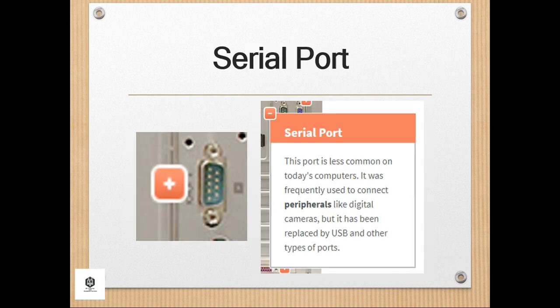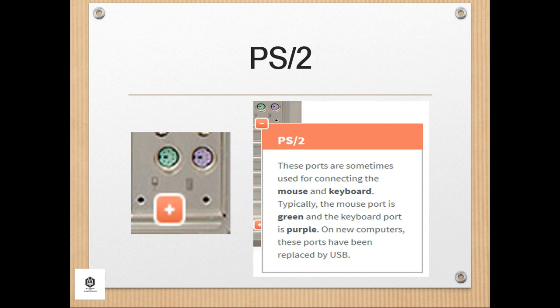Next is the serial port. This port is less common on today's computers; it was frequently used to connect peripherals like digital cameras but has been replaced by USB and other port types. Also, PS/2 ports are sometimes used for connecting a mouse and keyboard — typically the mouse port is green and the keyboard port is purple. On new computers, these have been replaced by USB.